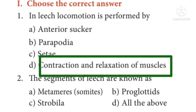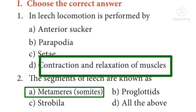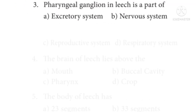Question 2: The segments of leech are known as — Options: A. Metameres, B. Proglottids, C. Strobila, D. All of the above. The answer is Option A: Metameres.